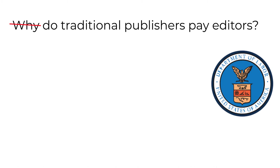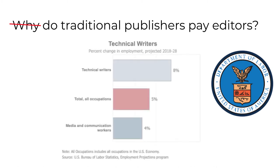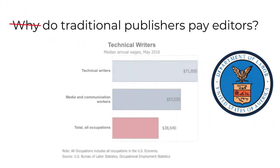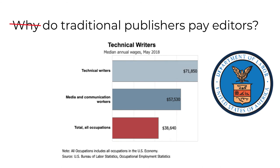Let me diverge for a minute to talk about the job outlook for editors, because it reflects the value industry places on quality content. In the U.S., we predict a 4% increase in all media and communication workers from 2018 to 2028 — a significant contrast to the job outlook for tech writers, which is projected to grow by at least 8% over the same period. The BLS predicts a 10% decline in news reporters and a 3% decline in general editors, but salaries for tech writers are higher than for other communication and media workers. Many tech editors working for non-traditional publishers are former tech writers who moved into management. The organizations willing to pay for quality content in 2020 are primarily non-traditional publishers.